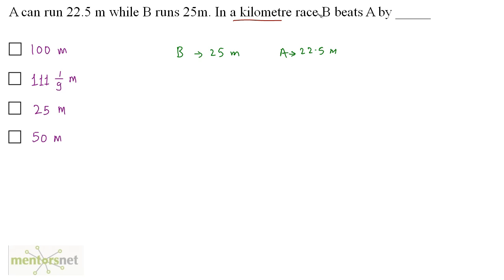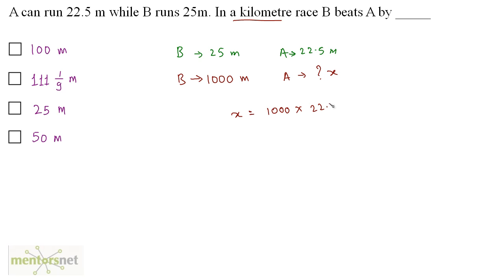B is at the winning point, meaning B has traveled one kilometer. When B has traveled 1000 meters, how much has A traveled? Let this be x. x equals 1000 times 22.5 divided by 25. 25 times 40 is 1000, and 40 times 22.5 gives 900 meters. So A has traveled 900 meters when B has traveled 1000 meters.